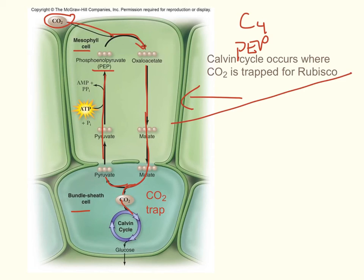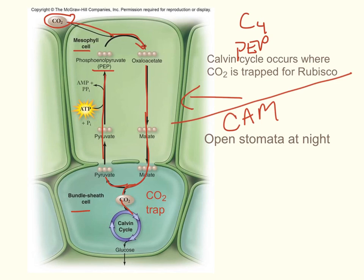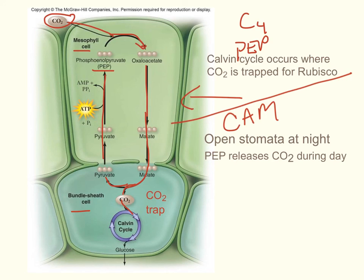Another method is used by CAM plants. Many succulents found in hot regions open their stomata at night — opposite to most plants, which open stomata during the day to maximize solar energy for photosynthesis. CAM plants fix carbon using PEP carboxylase at night, hold onto it, then release it for the Calvin cycle during the day when ATP and NADPH are being generated by the light-dependent reactions. This is done within the same cell, with the two reactions separated in time rather than in different cells.